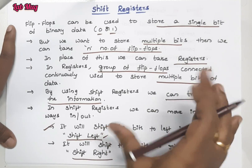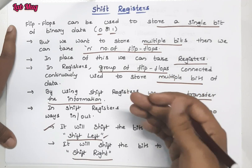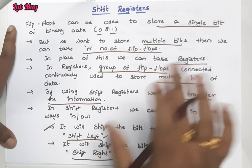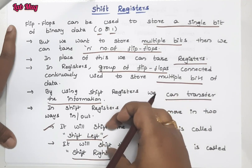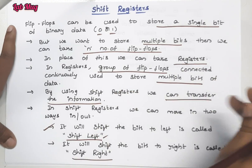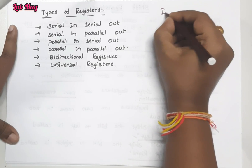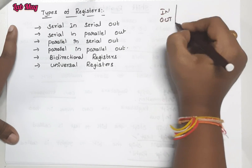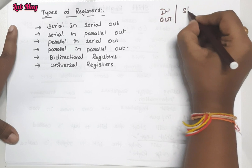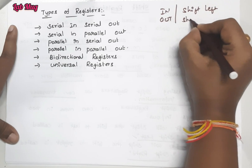So shift left and shift right are the two common operations in shift registers. Now in shift registers, the types are based on how data comes in and goes out — the two operations are input (in) and output (out).